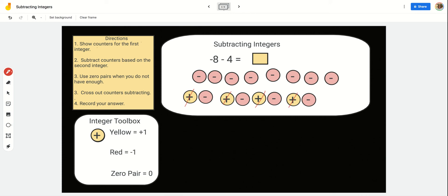Let's see how many negatives we have. We have 1, 2, 3, 4, 5, 6, 7, 8, 9, 10, 11, 12. So, negative 8 take away 4 is negative 12.